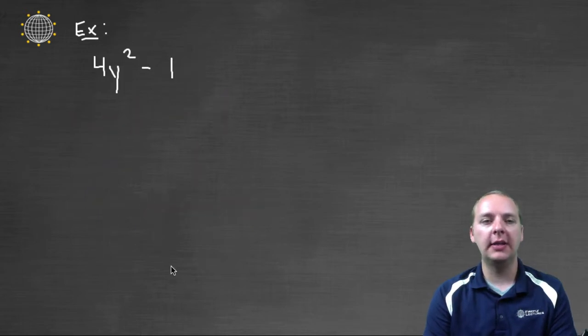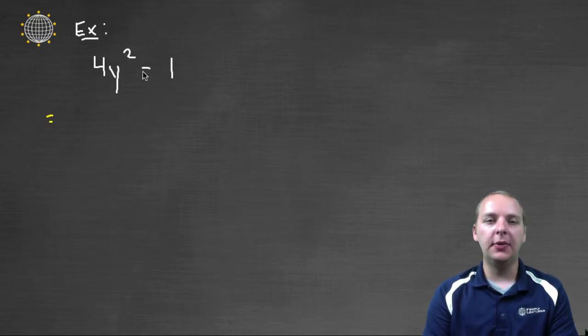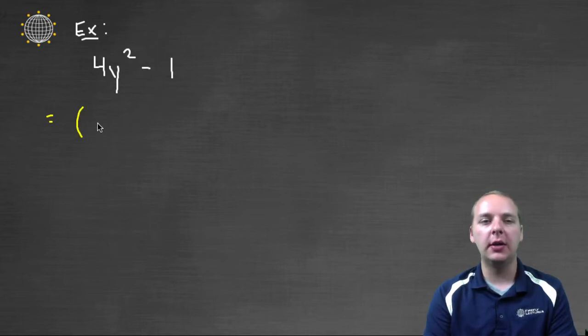Let's close with one last example. Let's say we have 4y² - 1. If you see a difference and it's two terms, it's worth investigating whether it's a difference of squares. We'll have something squared minus something squared.